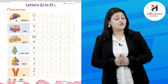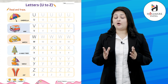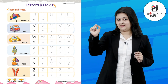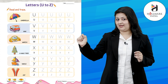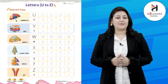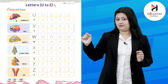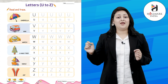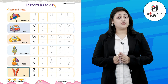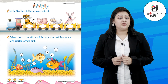Y for Yacht. The last alphabet is Z. To trace a capital Z, we take the line like this, then here, then here. That makes the capital Z. And again the line here, then here, then here — that makes the small Z. Z for Zebra.